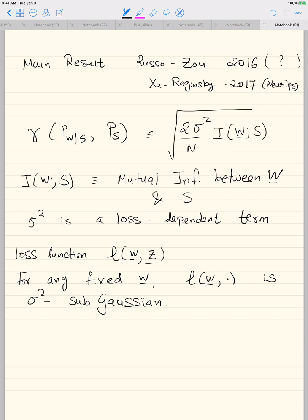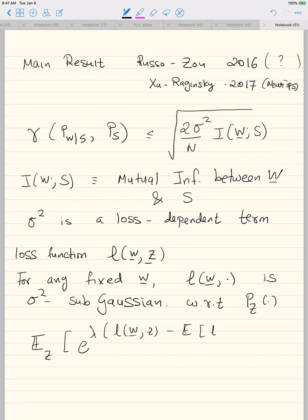If you assume the loss function is bounded in an interval, these assumptions are always satisfied. For example, if L(W, Z) ∈ [0, 1], it is sufficient to set σ² = 1. More generally, the sub-Gaussian condition requires that for any fixed W, the random variable L(W, Z) — centered by its mean under P(Z) — satisfies: E_Z[exp(λ(L(W,Z) − E_Z[L(W,Z)]))] ≤ exp(λ²σ²/2).